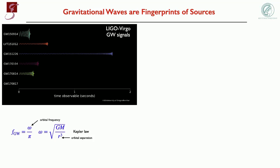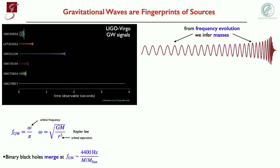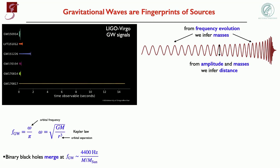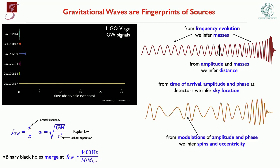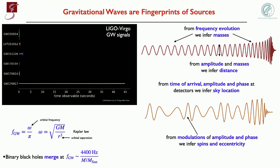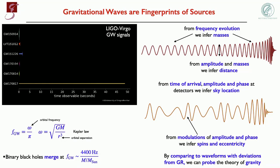The information about the binary is imprinted in the waveform. From the frequency evolution we infer the masses. From the amplitude and the masses we can infer the distance to the binary. From the time of arrival, amplitude, and phase across the three detectors on Earth, we can infer the sky location. If we see modulations in the signal, we can understand whether the two objects are on a circular, elliptic, or eccentric orbit. We can even learn whether the black holes or neutron stars were spinning. And by comparing with theories of gravity different from general relativity, we can probe the theory of gravity.